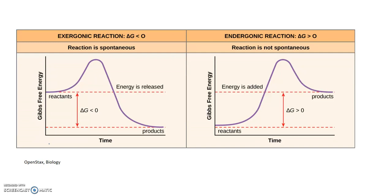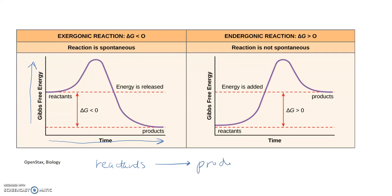This is the progression of the reaction along the x-axis, and energy is increasing going up. For a reaction, we have reactants as our starting material, and we end up with products.